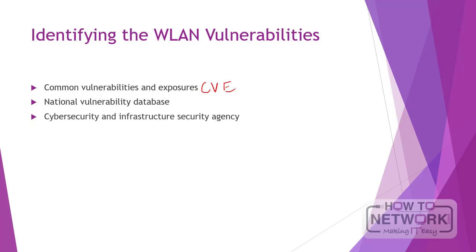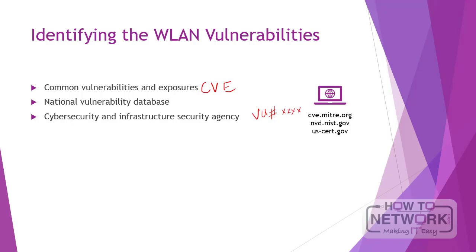The Cybersecurity and Infrastructure Security Agency, or CISA, is another US agency that provides extensive cybersecurity and infrastructure security knowledge and practices, and shares knowledge to enable better risk management. CISA may assign a number starting with VU# followed by a number to a vulnerability. This agency sends out regular bulletins by email alerting enrollees to newly discovered vulnerabilities — information that is important for pen testers to be aware of. You can search for CVE details on these websites.